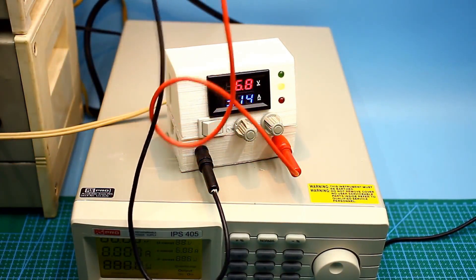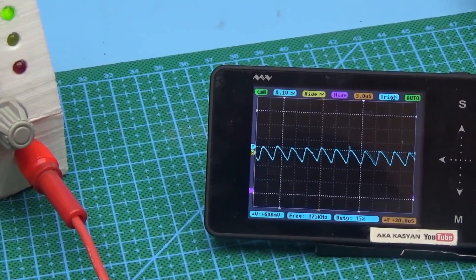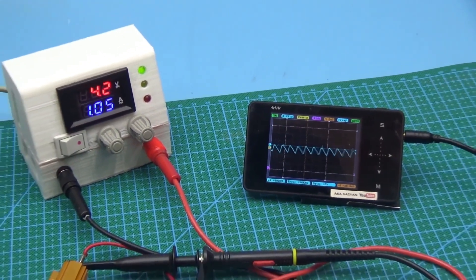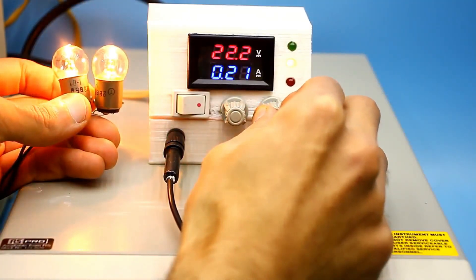However, this is only for a short period. The output voltage ripple at a current of 1 amp is about 120 to 150 millivolts. And that's a lot. Therefore, it can't be called a full-fledged lab power supply.